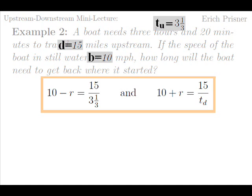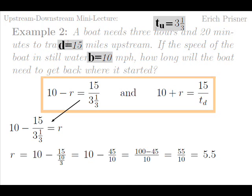With tu equals three one third, we get ten minus r equals fifteen divided by three one third, and ten plus r equals fifteen over td. The first equation has only one variable r, so we can solve this for r. We get ten minus fifteen over three one third equals r. Or r equals ten minus fifteen over ten over three, which is ten minus forty-five over ten, which is equal to one hundred minus forty-five over ten, which is equal to fifty-five over ten, five point five.